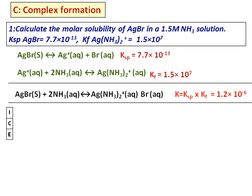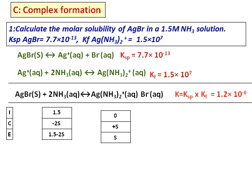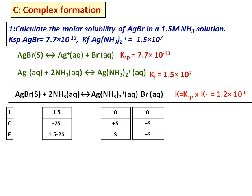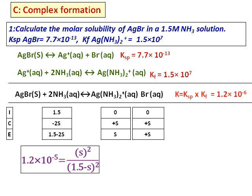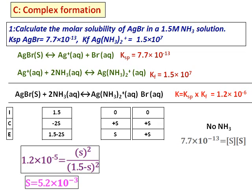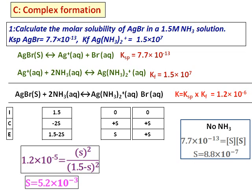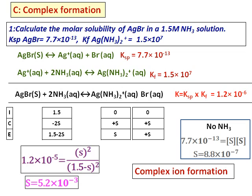The concentration of ammonia is given. Set up the ICE table — the initial concentration of the complex is 0, and the change is +S. Substitute into the equilibrium expression and solve for S. The solubility comes out as S = 5.2 × 10⁻³ M. Without ammonia and no complex formation, S = 8.8 × 10⁻⁷ M. Comparing both values shows that solubility is much larger in the presence of ammonia, confirming that complex ion formation increases solubility.